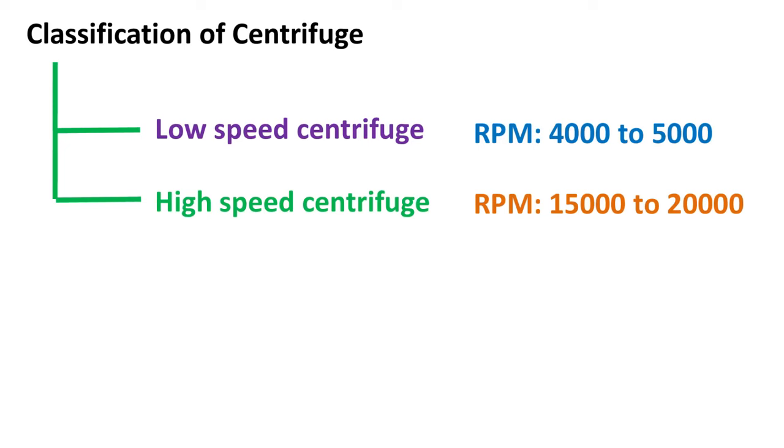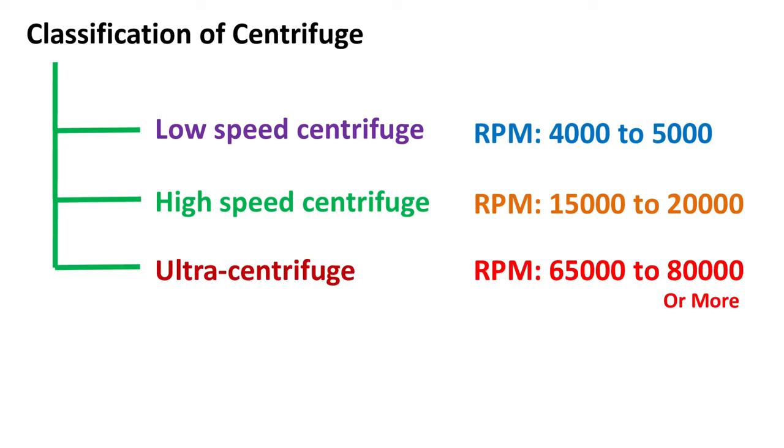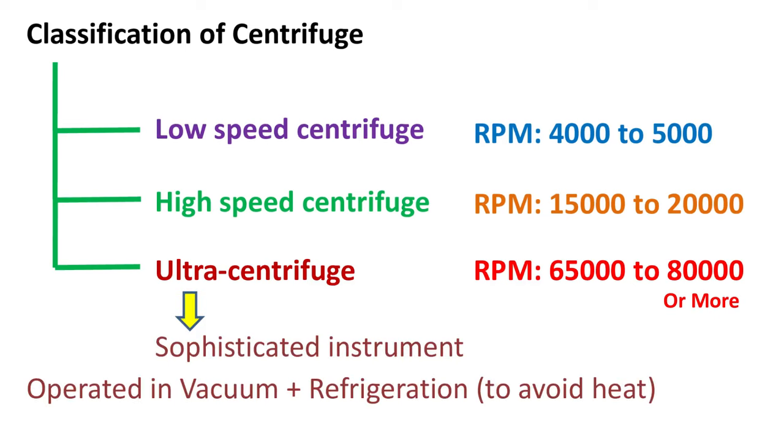On the other hand, ultracentrifuge can operate at maximum 65000 to 80000 RPM or even more. Ultracentrifuge is a sophisticated instrument which is operated in vacuum along with refrigeration to control the heat generated at such high RPM.